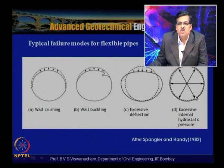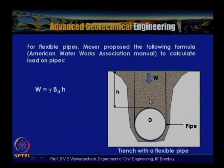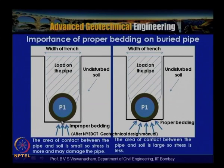To summarize, the four typical failure modes of flexible pipes are wall crushing, wall buckling, excessive deflection, and excessive internal hydrostatic pressure. For flexible pipes, the load is given by: W = γ × bd × h, where bd is the pipe diameter and h is the embedded depth.